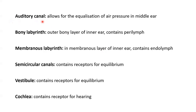The auditory canal, also called the pharyngotympanic or Eustachian tube, allows for equalisation of air pressure in the middle ear. The bony labyrinth makes up the outer bony layer of the inner ear and contains perilymph. The membranous labyrinth is the inner membranous layer and contains endolymph. The semicircular canals contain the receptors for dynamic equilibrium across three planes. The vestibule is the rounded middle portion containing receptors for static equilibrium. And the cochlea, which looks a little like a snail, contains our receptors for hearing.